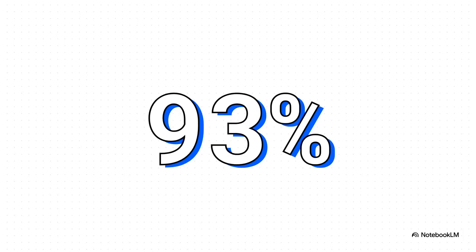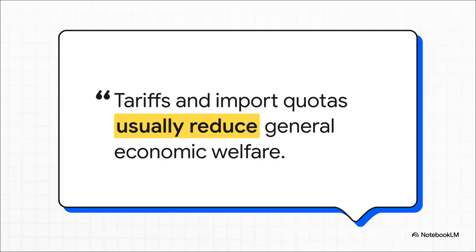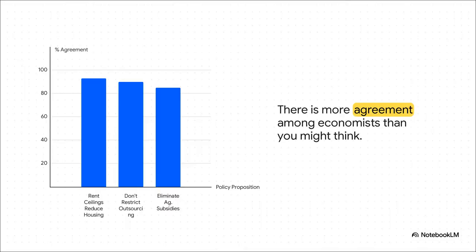But here's the thing: while all their disagreements make for great headlines, the reality is that on a whole bunch of core issues, there is a shocking amount of agreement among economists. How much agreement? 93%. So what could 93% of economists possibly agree on? This statement: 'Tariffs and import quotas usually reduce general economic welfare.' Even though this is debated endlessly in politics, among the people who study this for a living, it's pretty much a settled question. And it's not just tariffs — there's a massive consensus on other really controversial issues too, like rent ceilings hurting housing supply, restricting outsourcing being a bad idea, or that we should probably get rid of agricultural subsidies. The perception of disagreement is often way bigger than the reality.